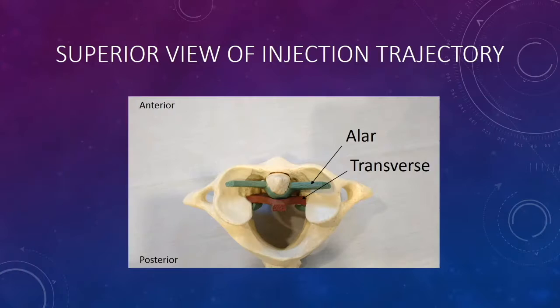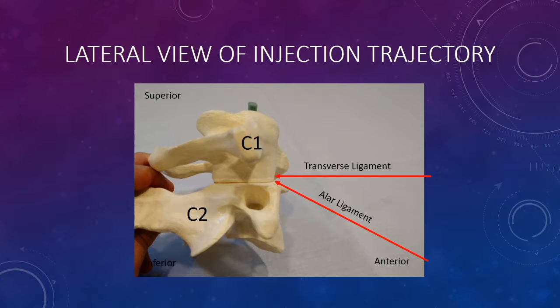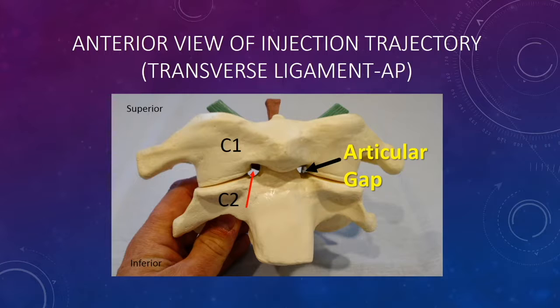The good news is there's really very little in the way in the back of the throat for these injections, and my colleagues agreed when they looked at the anatomy. This is the superior, top-down view of the injection trajectory we use. If we tried to come in from the back, the spinal cord's in the way — so we come in from the front. Those are the two different trajectories used to get to the different ligaments, as seen from the side. We're exploiting what I'm calling an articular gap — from the front there's a small hole between C1 and C2 that you can actually get a needle through.